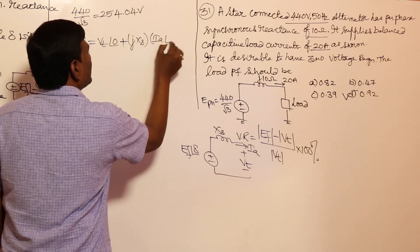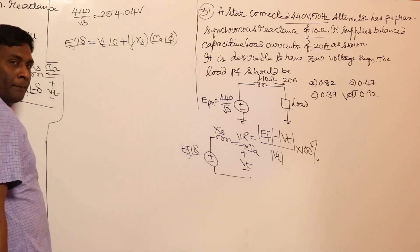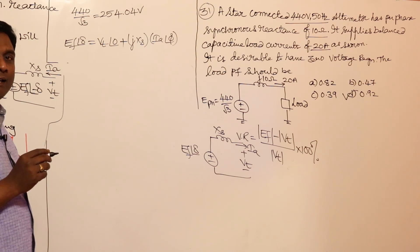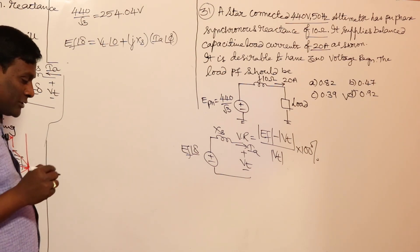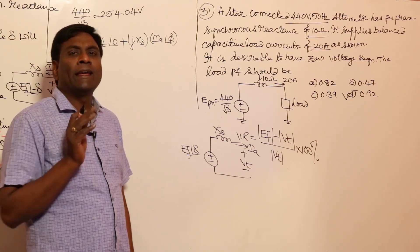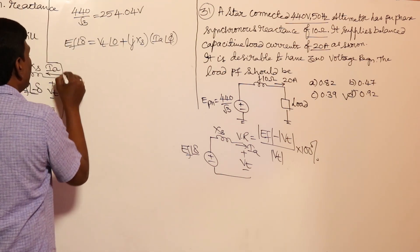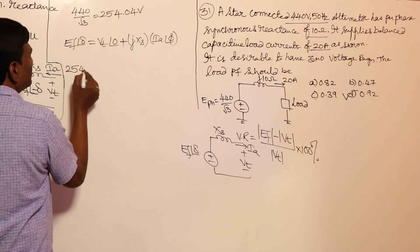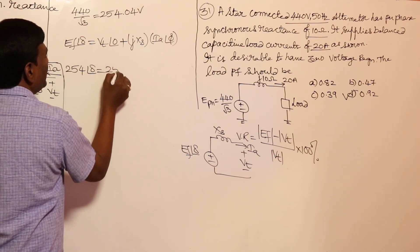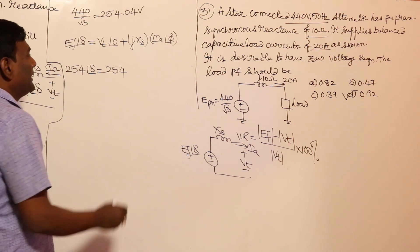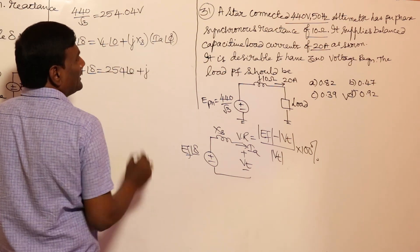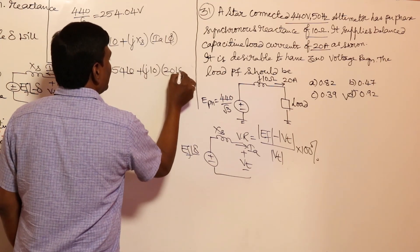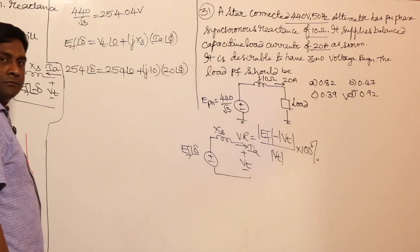Now this phi value — should I get negative or positive? Positive, because zero voltage regulation should occur at leading power factor. So: EF = 254 at angle delta equals VT = 254 at angle 0, plus j·Xs (= 10) times IA (= 20) at angle phi. In this equation we need to calculate phi.